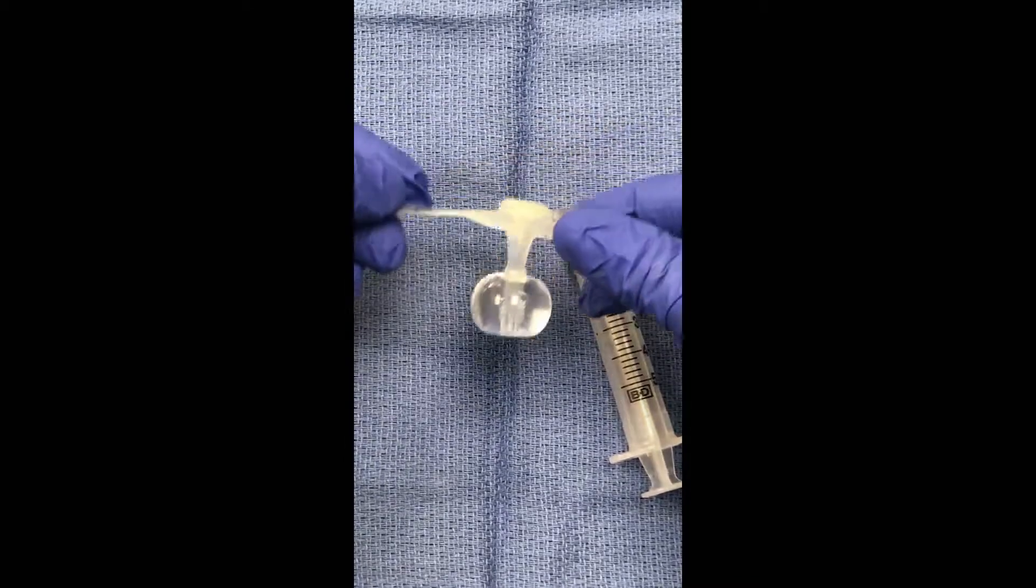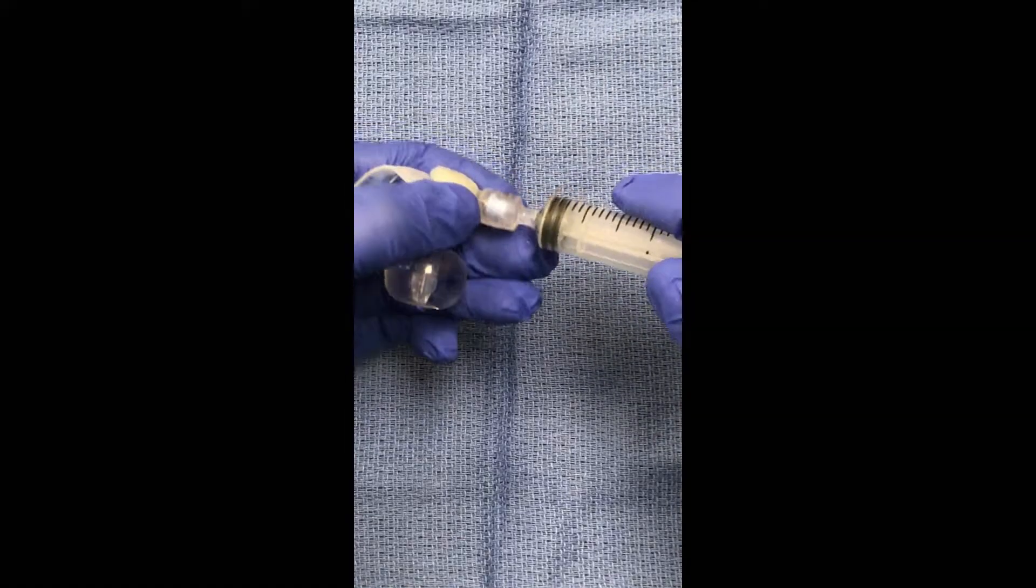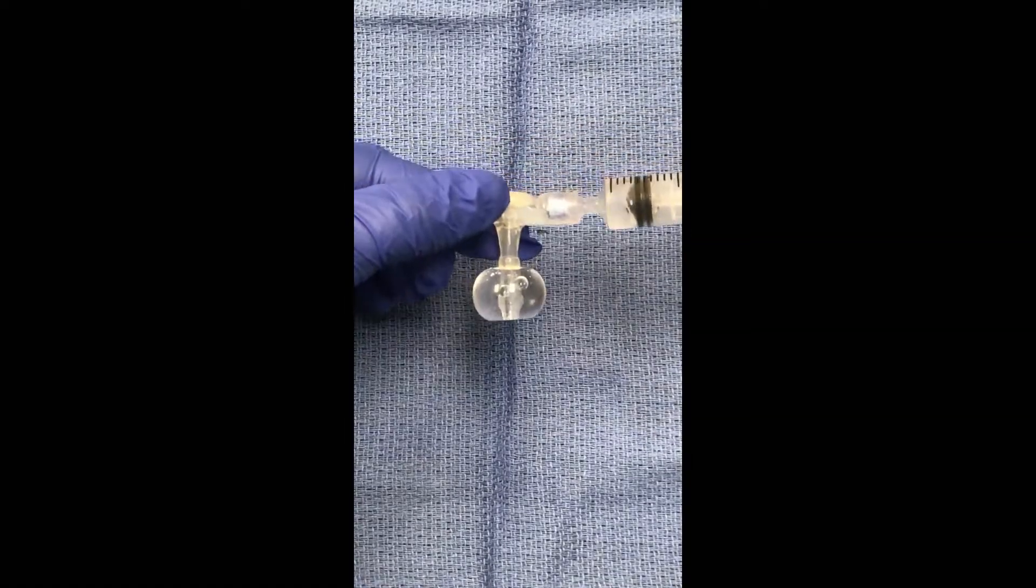See if any water is leaking and if the balloon maintains its shape. To remove the water, reinsert the syringe and slowly withdraw all of the water that you've placed.